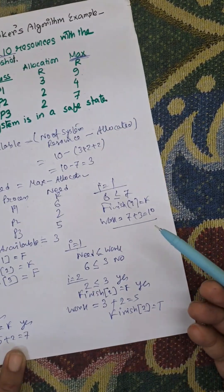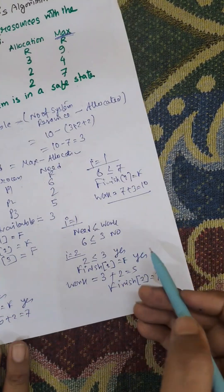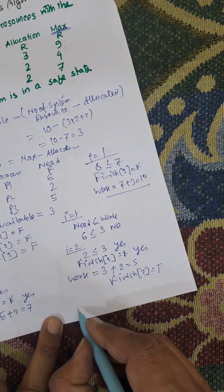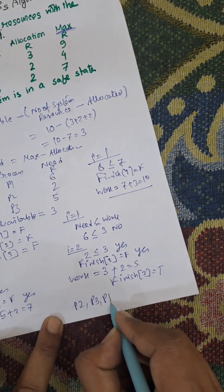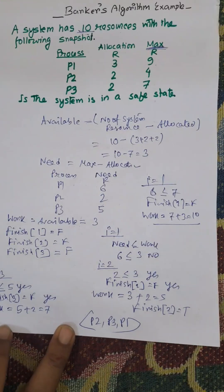So all the processes are released. And safe sequence is now there is P2, then P3, and finally P1. So we can say the system is in safe state.